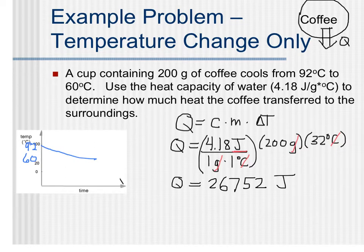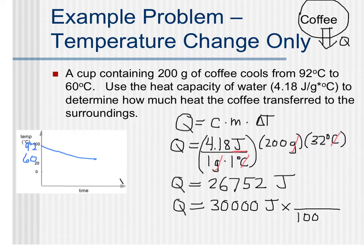Now, as with every problem, we need to consider significant figures. The 200 grams was measured to one significant figure. 92 degrees and 60 degrees, between those two, there's one significant figure. So our answer should be reported with one significant figure. So it will be rounded to 30,000 joules, or if you wanted to write this in kilojoules, which is commonly used because a joule is so small. There are 1,000 joules in one kilojoule. Therefore, this would be equal to 30 kilojoules.